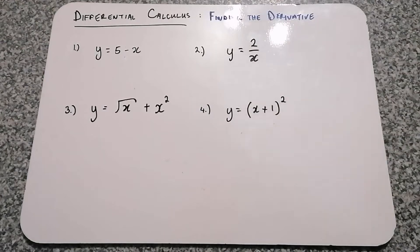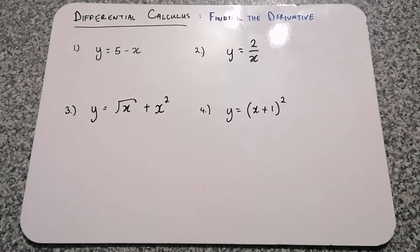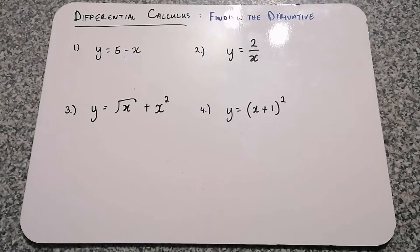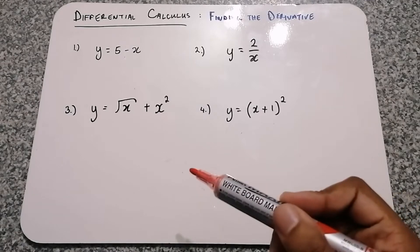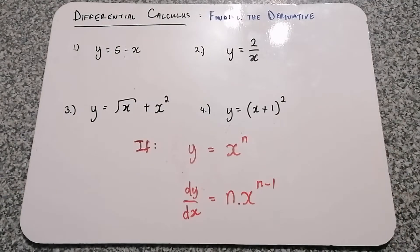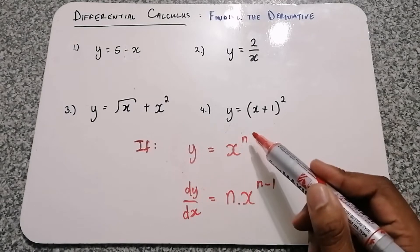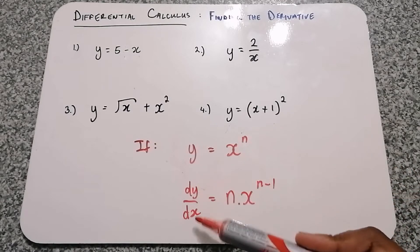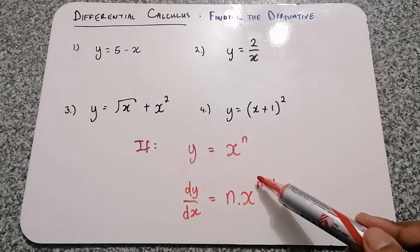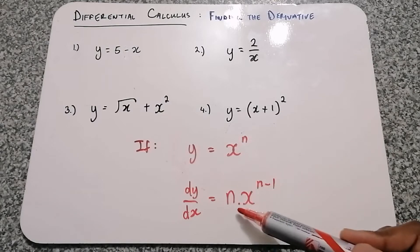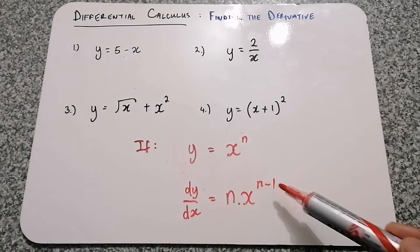Hi there everyone. We're looking at a small topic in calculus called differential calculus. We're going to be finding the derivative using the power rule. This rule states that if y is equal to x to the power of n, then the derivative of y will be n times x to the power of n minus 1.